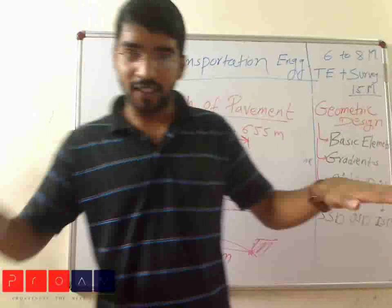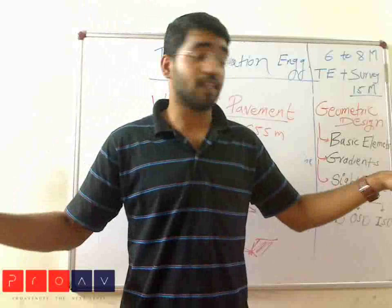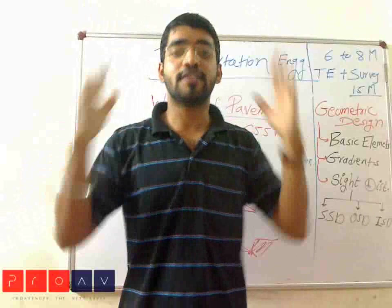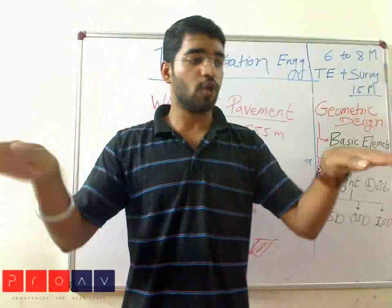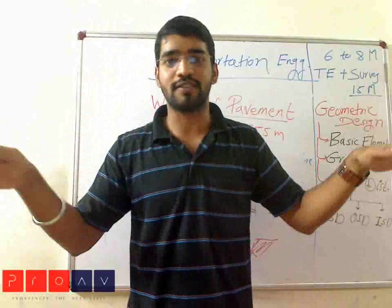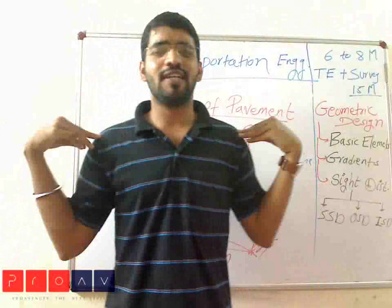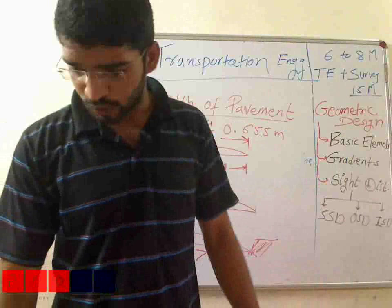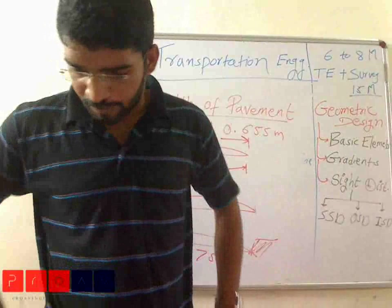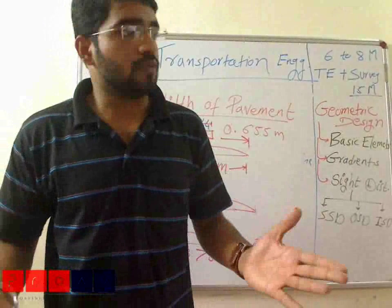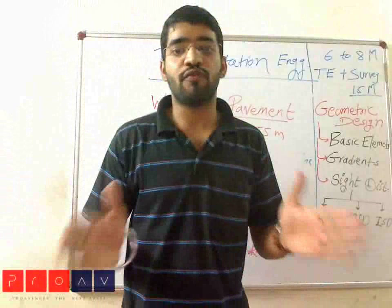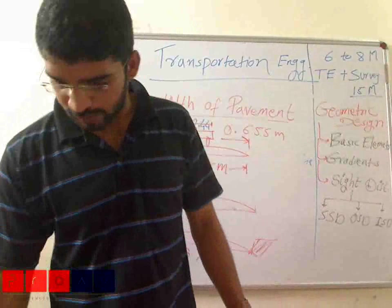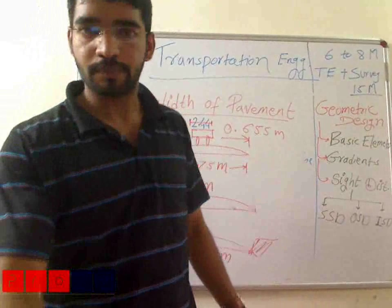Then there are road margins, which we see on either side — we call them shoulders. Suppose this is the main road; on the main road we have shoulders on either side. The minimum shoulder width as per IRC is 2.5 meters.